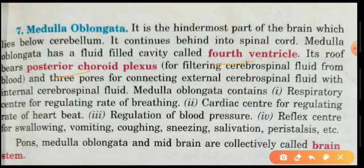The medulla oblongata controls blood pressure and heartbeat. It is also involved in controlling breathing, as well as some reflexes — such as sneezing, coughing, vomiting, salivation, and peristaltic movement. These reflexes are under the control of the medulla oblongata.